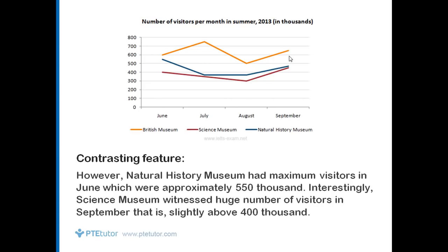Now for the contrasting feature — connectors like 'however' and 'whereas' can be used. For example: 'However, Natural History Museum had maximum visitors in June, which were approximately 550 thousand. Interestingly, Science Museum witnessed a huge number of visitors in the month of September, that is slightly above 400 thousand.' The word 'interestingly' can act as a neutral connector that you can fit anywhere.